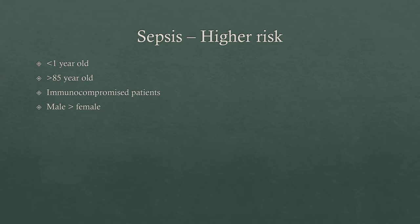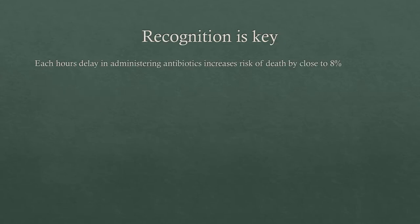Those at higher risk include the very young — less than one year old, but also under five — particularly younger children, and those greater than 85 years old. Compromised patients, such as those having chemotherapy, are at higher risk. The incidence is also higher in males than females. Recognition is key: data has shown that each hour of delay in administering antibiotics increases the risk of death by close to 8%. So early recognition and early treatment are the most important things.